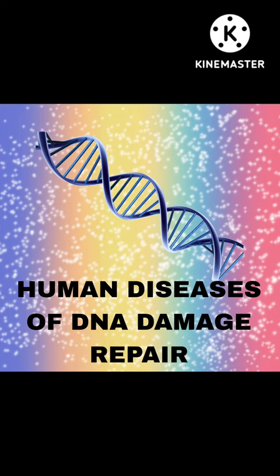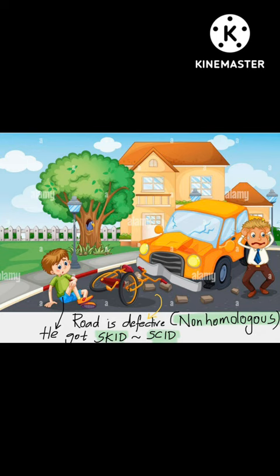Let us learn about human diseases of DNA repair damage. The first image shows a non-homologous road — a defective road — so you skid on it. This represents NHEJ, and the mnemonic is SCID: Severe Combined Immunodeficiency Syndrome.